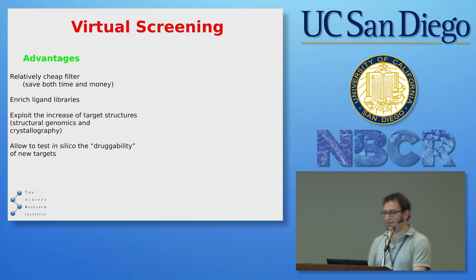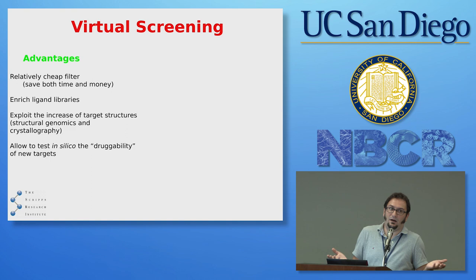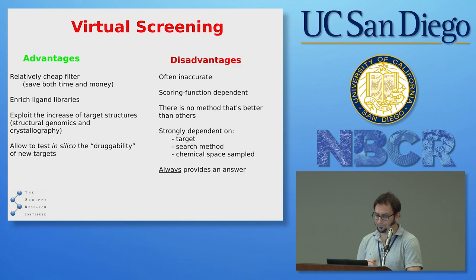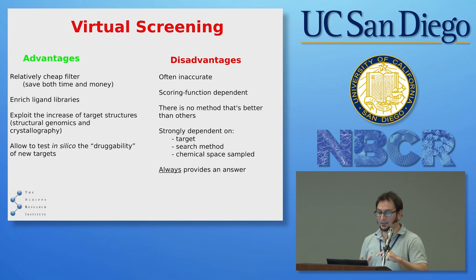What are the advantages of virtual screening? It is relatively cheap, saves money and time, and is used to enrich compound libraries. It is a perfect tool to exploit the high availability of target structures determined with structural biology and crystallography. It also allows you to test the druggability of a given system when no known drugs are available yet — if many molecules stick to a particular cavity, chances are it's druggable. The disadvantage is that we need to cut corners to use a scoring function in a high-throughput fashion.